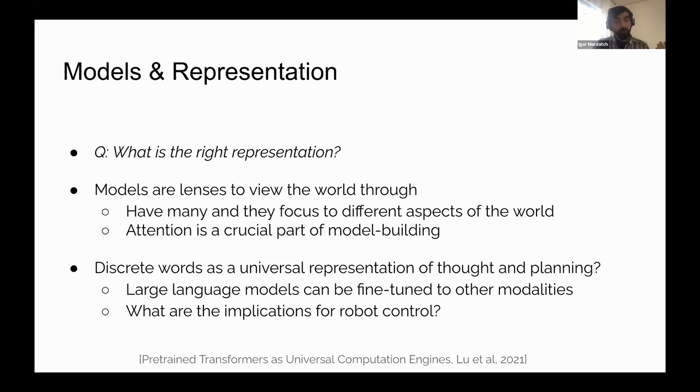One question I'm curious about is discreteness: can discrete words, or the language space, be a useful universal representation of thoughts and internal planning, not just something external? We've had some experiments that seem to confirm that large language models can actually be fine-tuned to other modalities like images, bit strings, or even protein sequences, without changing the internals of the model. So there's potentially some more universal computation of abstract tokens happening in these models. I'm curious about the implications for robot control.